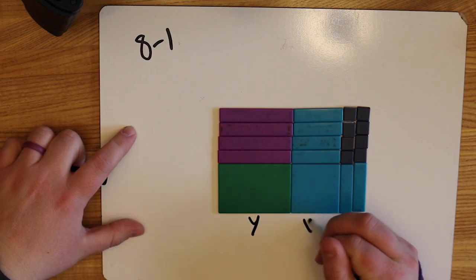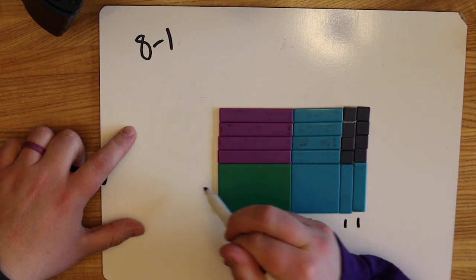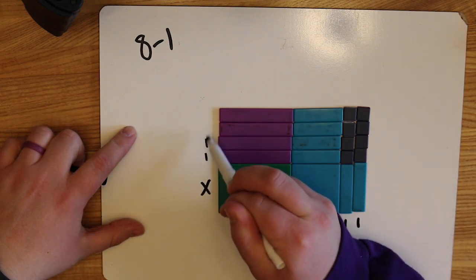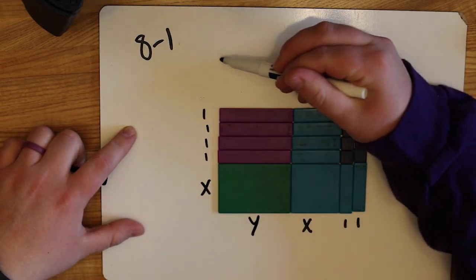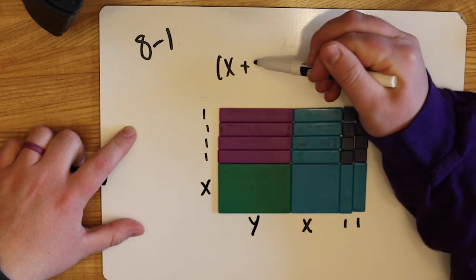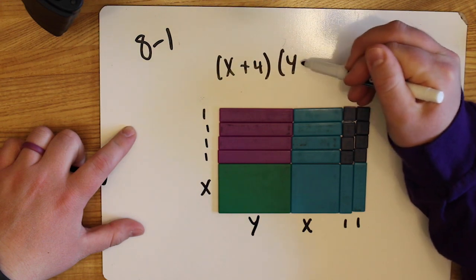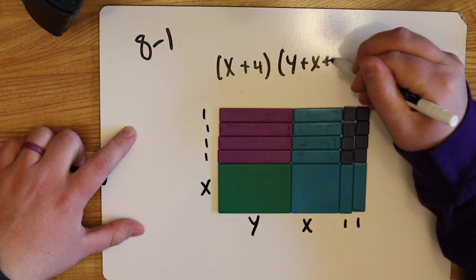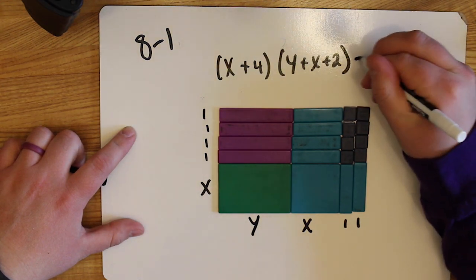Recall that the product is the perimeter of the rectangle, and then the product is these two things multiplied together. So we've got x plus 4 times y plus x plus 2.